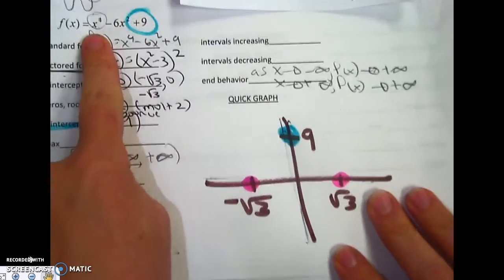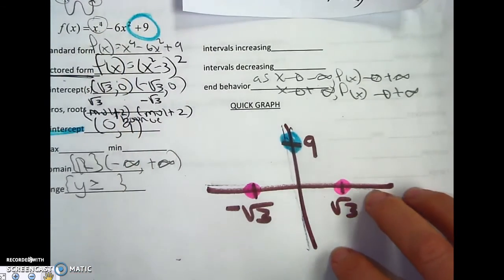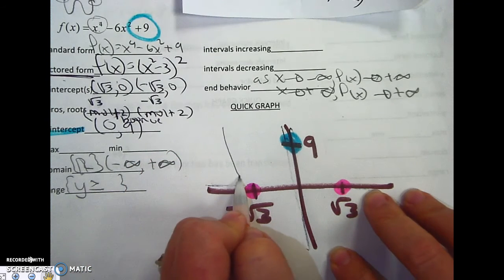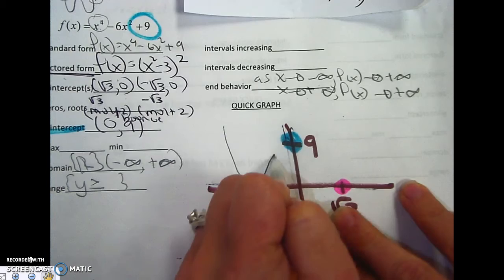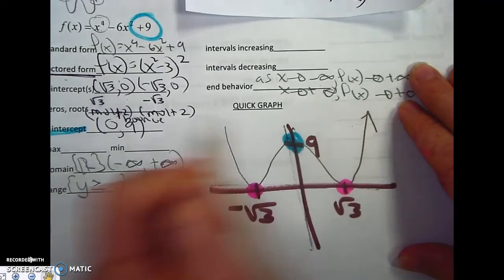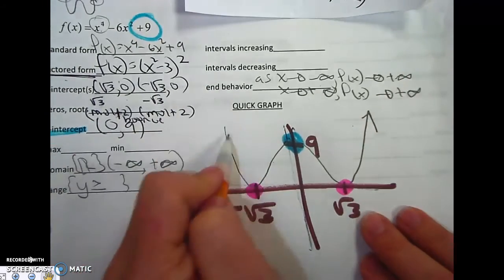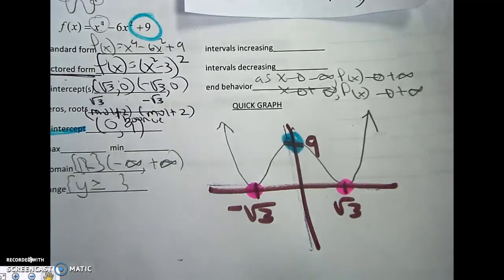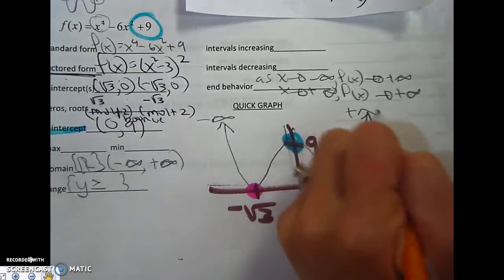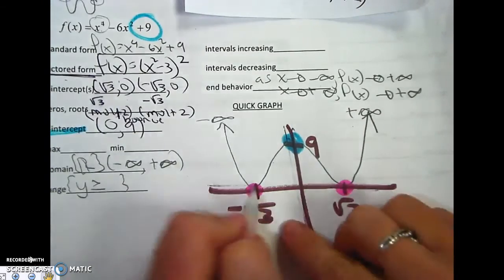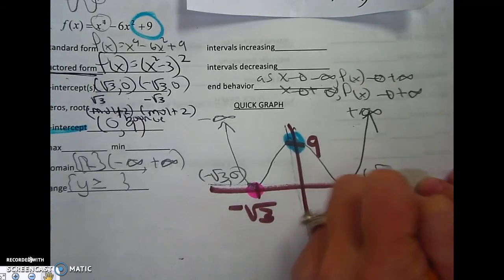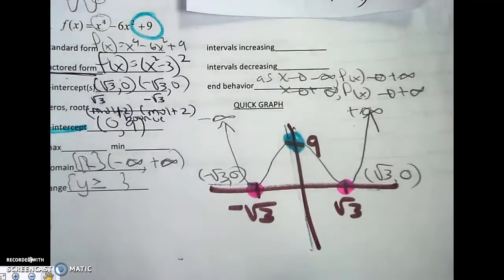If it's x to the 4th, x to the 4th is like x squared, which means it starts from the top. Now I go there. But remember, it's multiplicity 2, which means it's a bounce. And then I go through. And then rad 3 was also a bounce. And there is my rough sketch. So this is negative infinity. This is positive infinity. This is the value, negative rad 3, comma, 0. This is the value, rad 3, comma, 0.